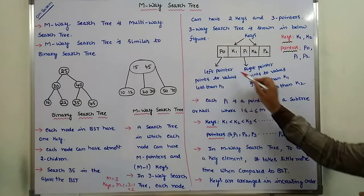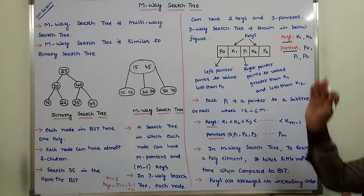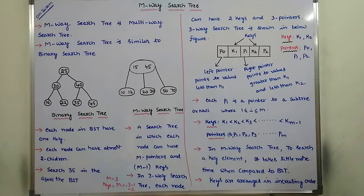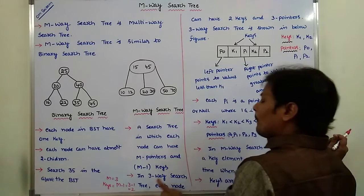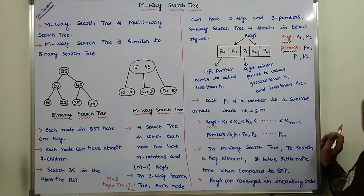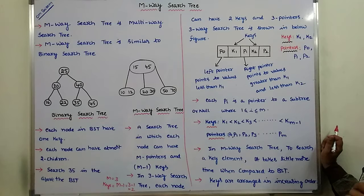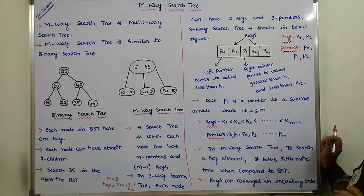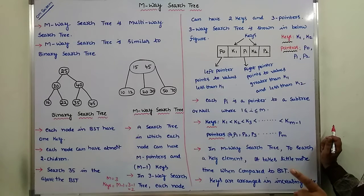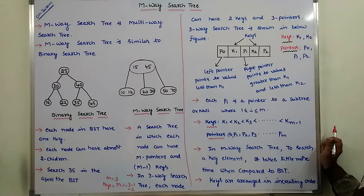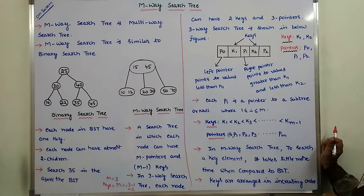This is the node structure example for the 3-way search tree. Suppose we are taking a 4-way search tree, that is M is equal to 4. M equals 4 means 4 pointers: P0, P1, P2, P3. The number of keys is M minus 1, that is 4 minus 1 equals 3 keys: K1, K2, K3.